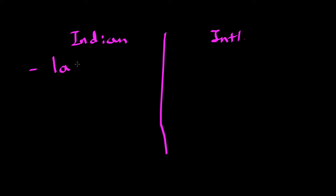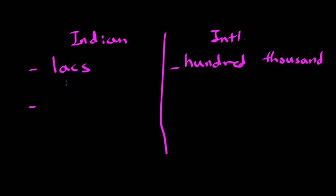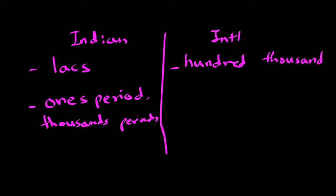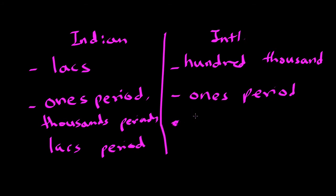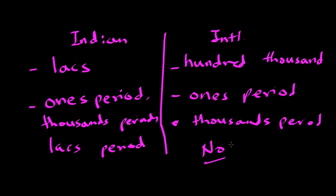The key difference points between the Indian and international systems: in the Indian system there is the concept of lakhs, whereas in the international system there is the concept of hundred thousands — no lakhs. In the Indian system the periods are: ones period, thousands period, and lakhs period. In the international system the periods are: ones period and thousands period — there is no lakhs period. That is the key difference. If you like this video please subscribe, details are below. Thank you.